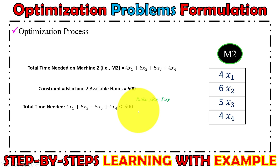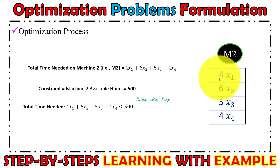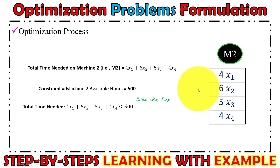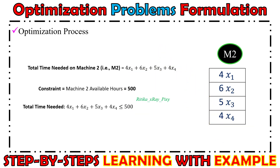Similarly for machine two: product one requires 4 hours — 4x1; product two requires 6 hours — 6x2; product three requires 5 hours — 5x3; and product four requires 4 hours — 4x4. Machine two is available for 500 hours each month, so the constraint is 4x1 + 6x2 + 5x3 + 4x4 ≤ 500.